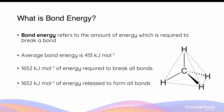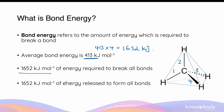we simply multiply the average bond energy of one carbon to hydrogen bond by a total of 4 such bonds. So when we multiply 413 by 4, we get a total energy required of 1652 kilojoules for every mole of methane.